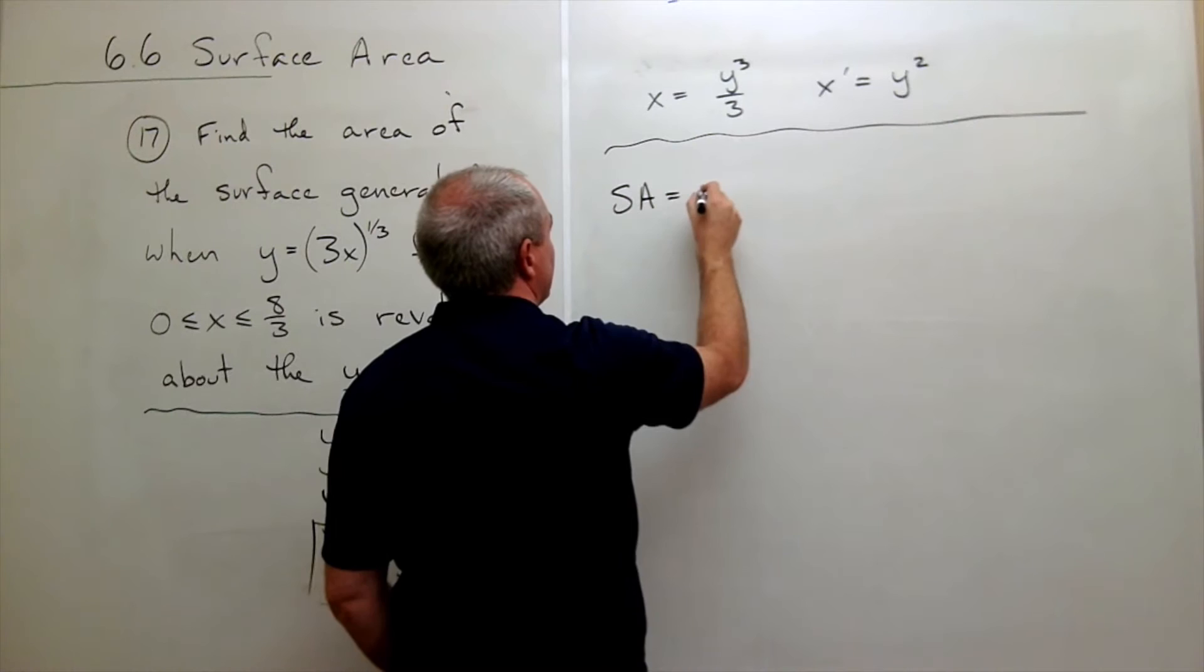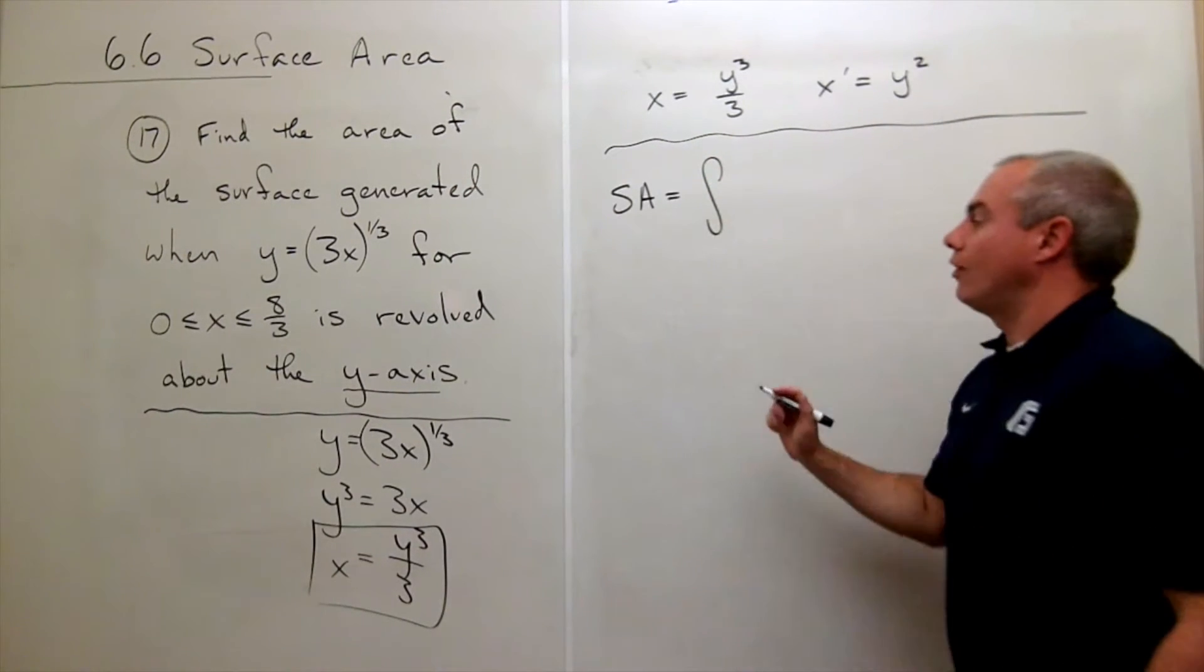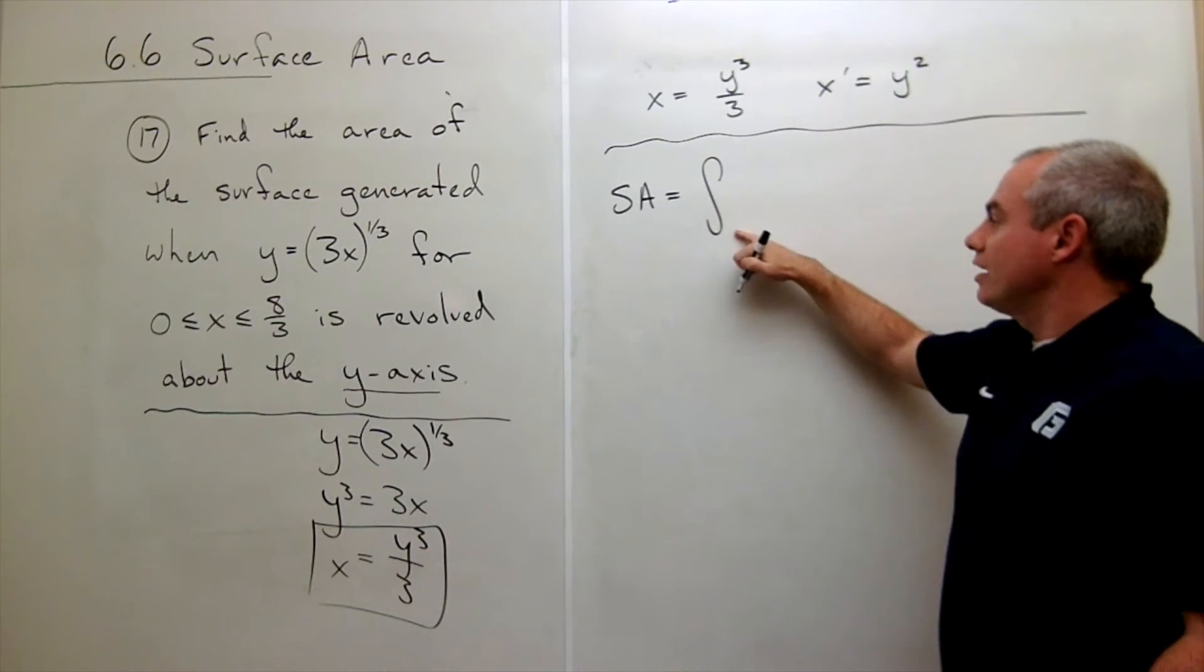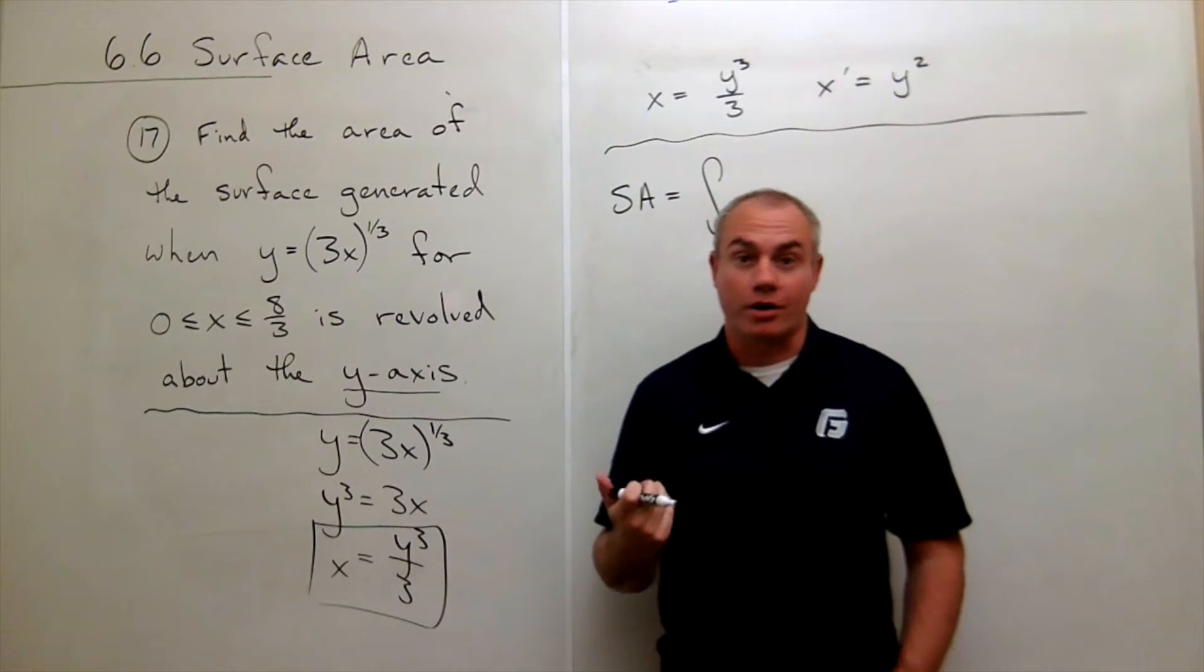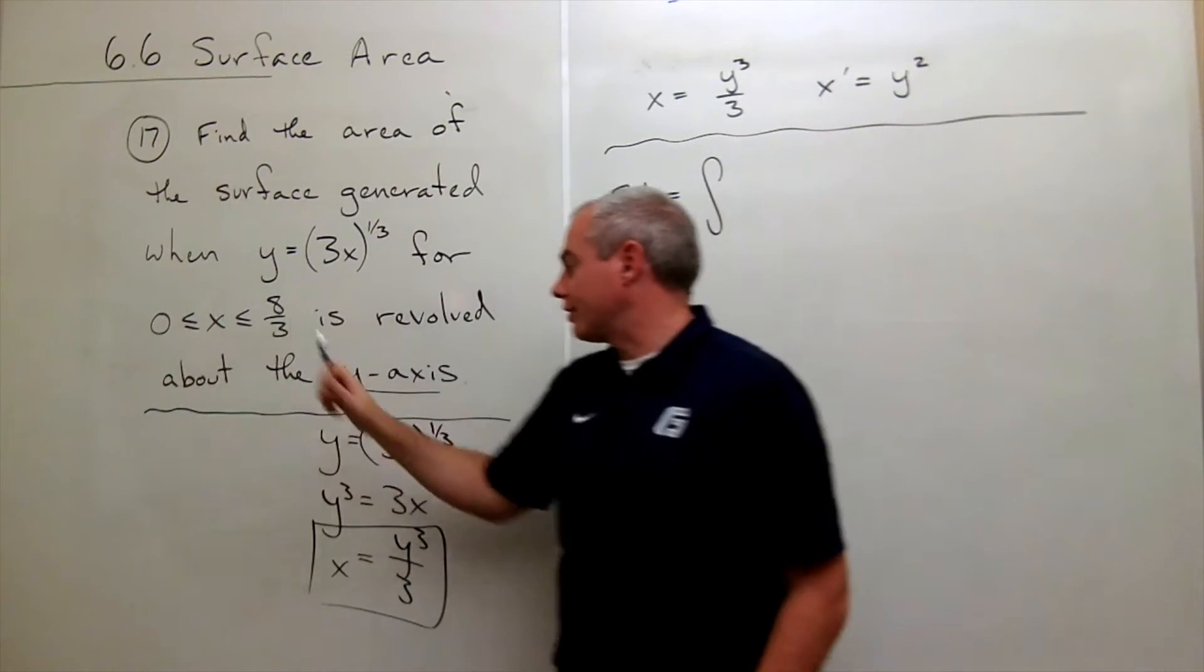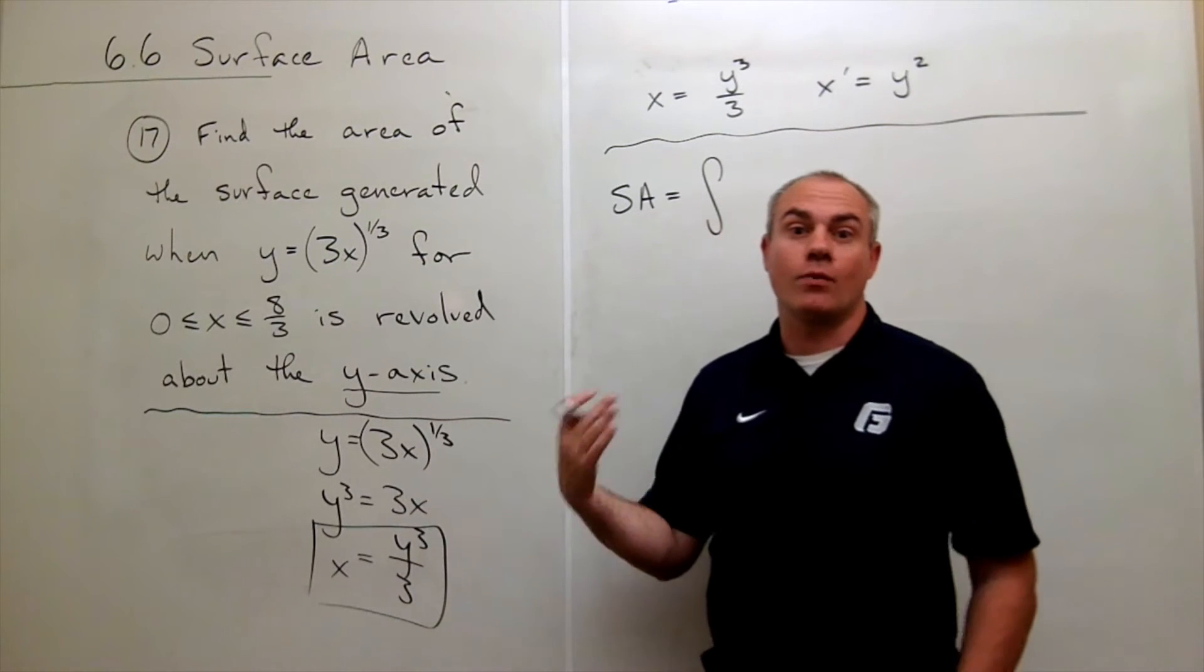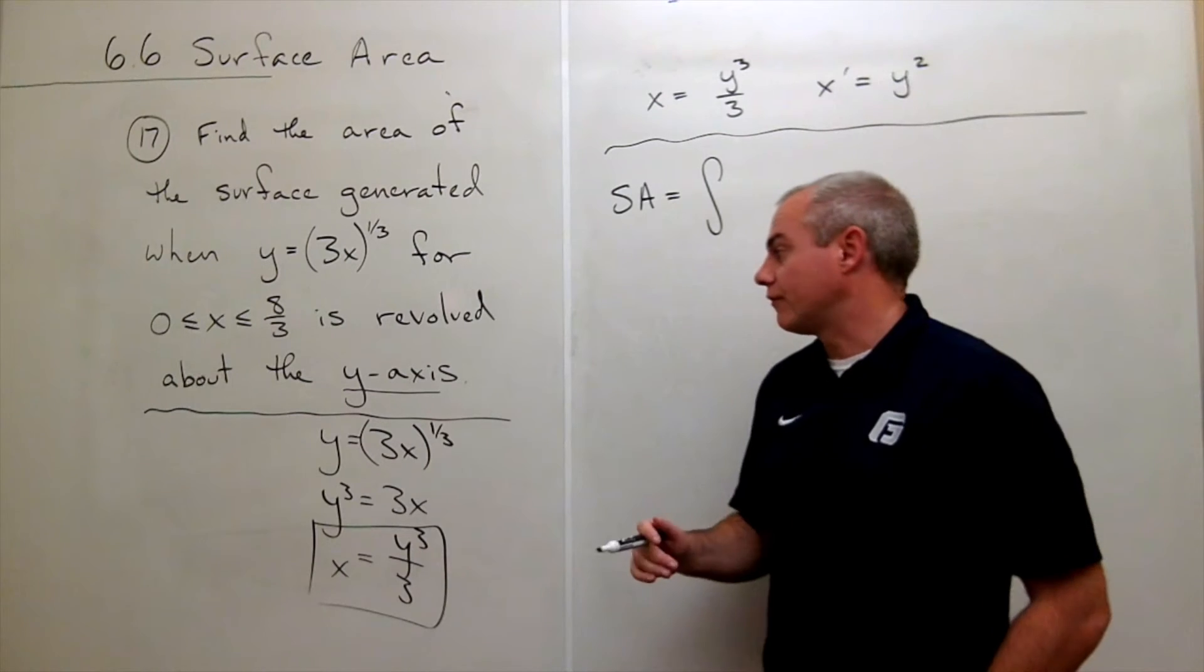And now I can go ahead and set up my surface area formula. Surface area is equal to integral from a to b. Now, I've got to be careful here as well because I could just plug in 0 and 8/3, and that would be wrong because those are x values. What I need are y values, so I need to take 0 and 8/3, plug them into the original equation, and see where am I actually integrating to and from.